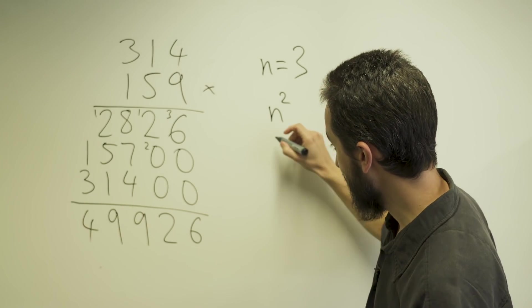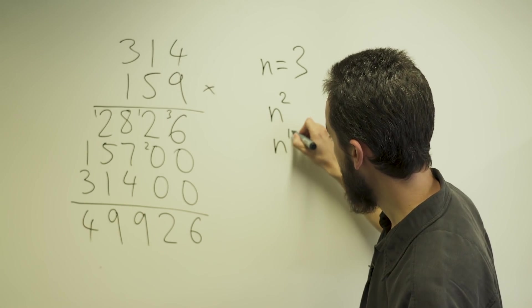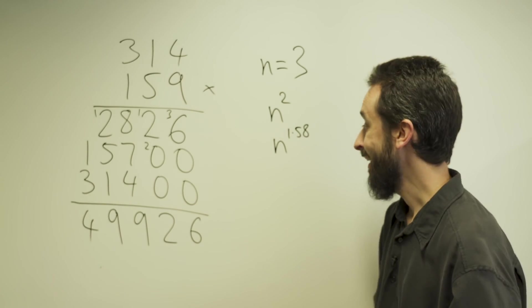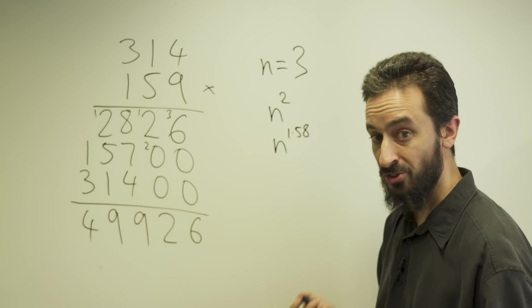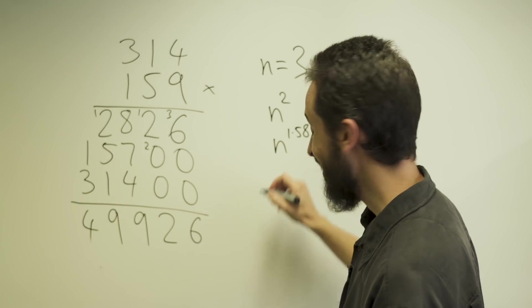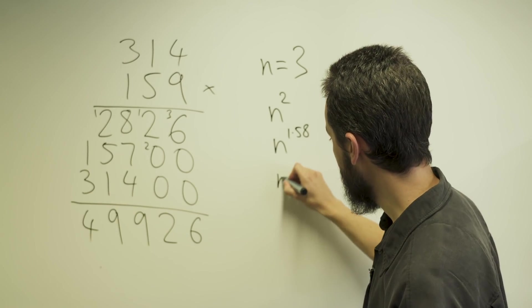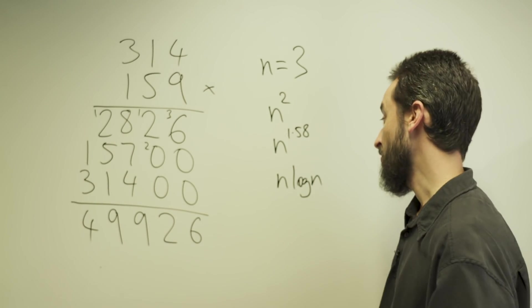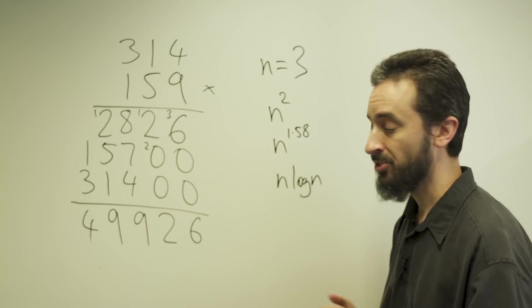At that point, Karatsuba discovered a better algorithm, which is something like n to the 1.58. And then Schoenhage and Strassen in 1971 conjectured that you should be able to do it in n times log n operations. They weren't able to prove this, but this is what they said should be possible.